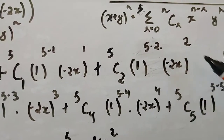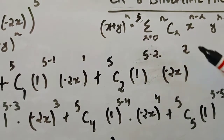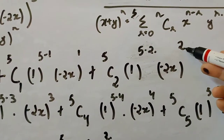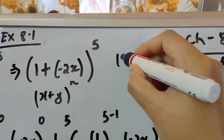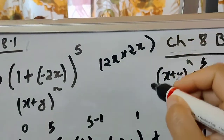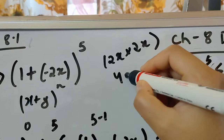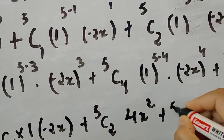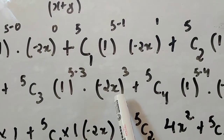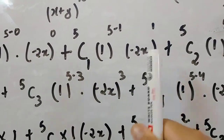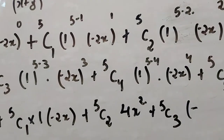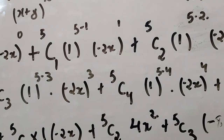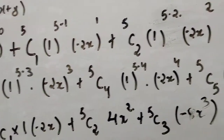So minus 2x to the power 2 — since 2 is even — gives a positive result: 4x squared. For 5C3 with minus 2x to the power 3, the power is odd so the answer is negative, giving minus 8x cubed.